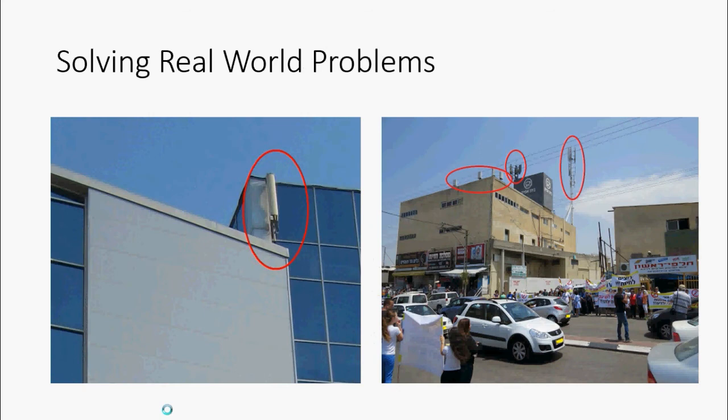One example for Biot-Savart's law usage is in solving the intensity of the magnetic field for mobile phone transmitters and cell towers on buildings.